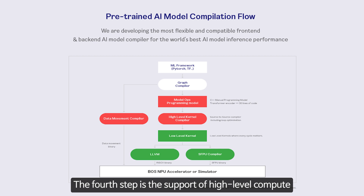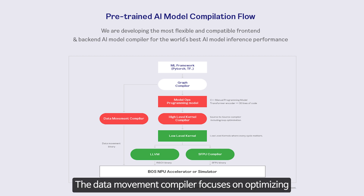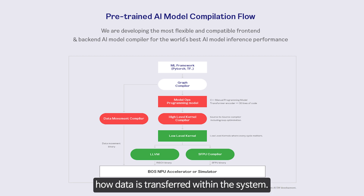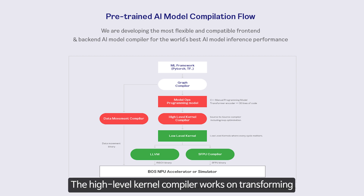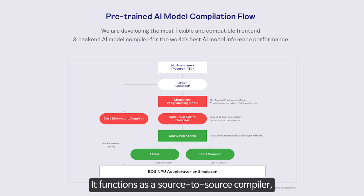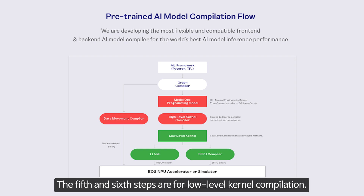The fourth step is the support of high-level compute and data movement kernel compilation. The data movement compiler focuses on optimizing how data is transferred within the system, generating a data movement binary crucial for efficient data handling during inference. The high-level kernel compiler transforms high-level operations into a low-level representation, functioning as a source-to-source compiler with loop optimization to enhance performance.